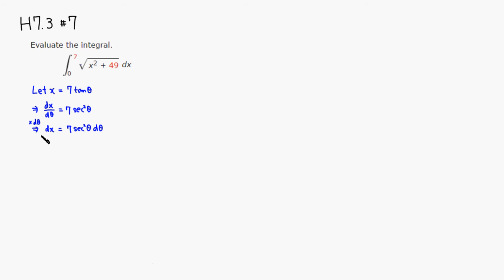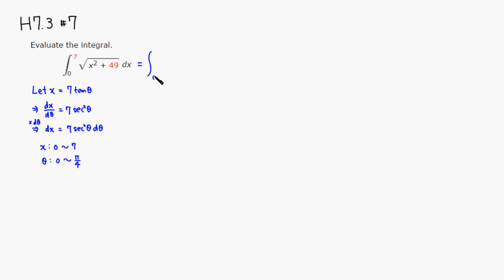In this case x is going from 0 to 7, so now we convert the limits to theta. When x is 0, tangent of theta is 0, so theta is 0. When x is 7, tangent of theta is 1, so theta is π/4. So the new limits are 0 to π/4.